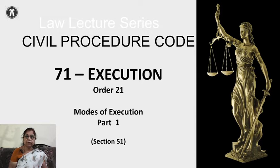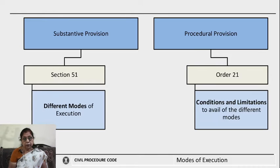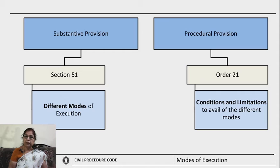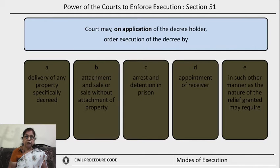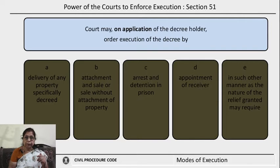Section 51 of the Civil Procedure Code speaks about the different modes of execution. This is the substantive provision, while Order 21 is the procedural provision which speaks about the conditions and limitations to be observed when availing of the different modes. The powers of the court to enforce execution are stated in section 51. Once a decree holder obtains a decree, he can apply to the court, and the court may order execution by any of the available modes.